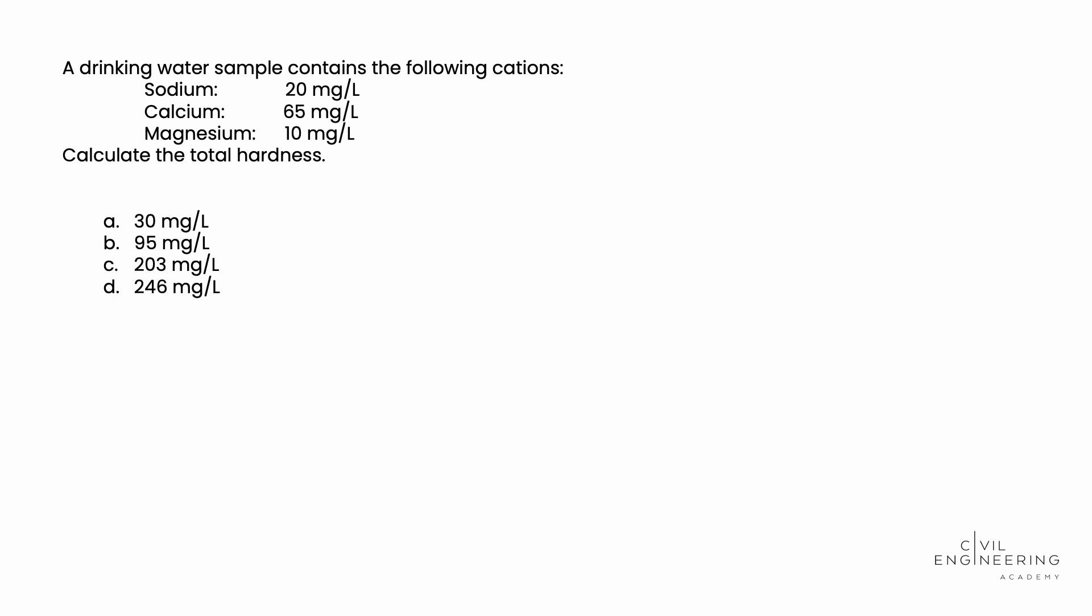To solve this problem, we're going to turn to the P.E. Reference Handbook and look specifically at the lime soda softening equations in the P.E. Environmental section. The other piece of information we use is the data on selected elements and common radicals table, which is also in the P.E. Water Resources and Environmental section of the Reference Handbook.